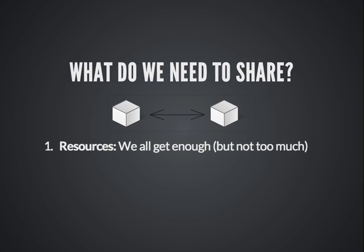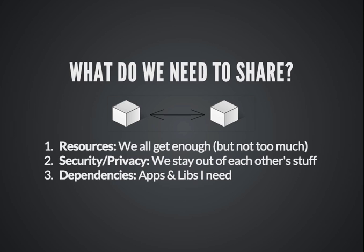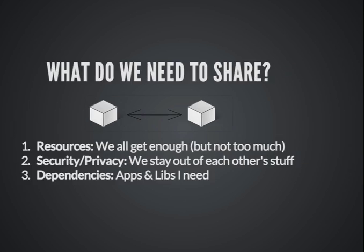So what do we need to share? Typically resources: CPU, memory, disk space, disk I/O. Security and privacy — we need to make sure that if we're sharing a computer, we're not sharing too much. And dependencies — we need to make sure that you can have the dependencies you need for your app installed, and I can have the dependencies I need for my app, and that both apps can still run.